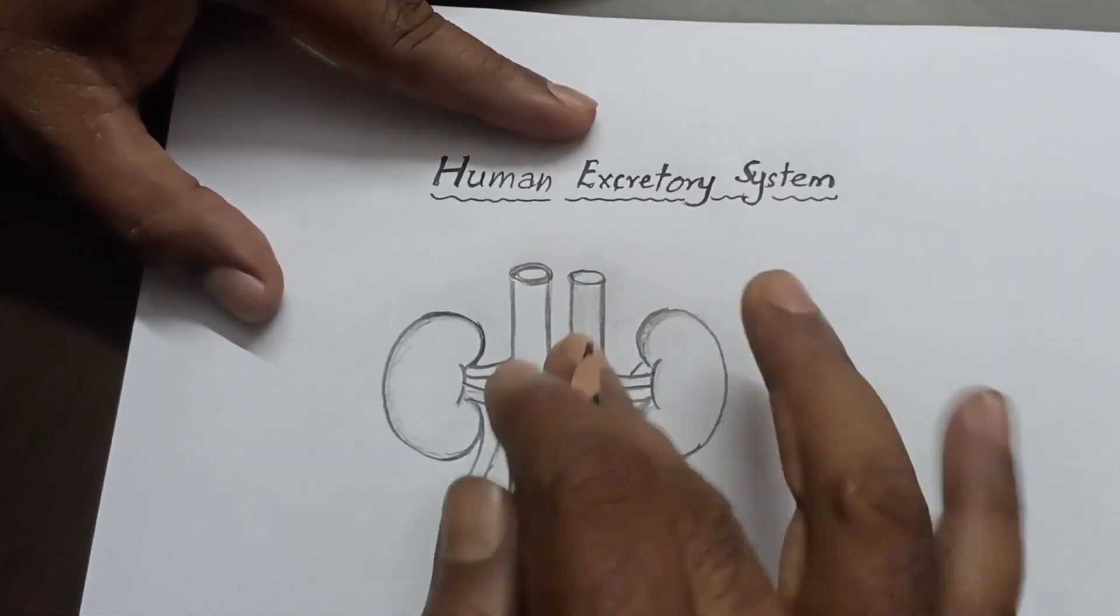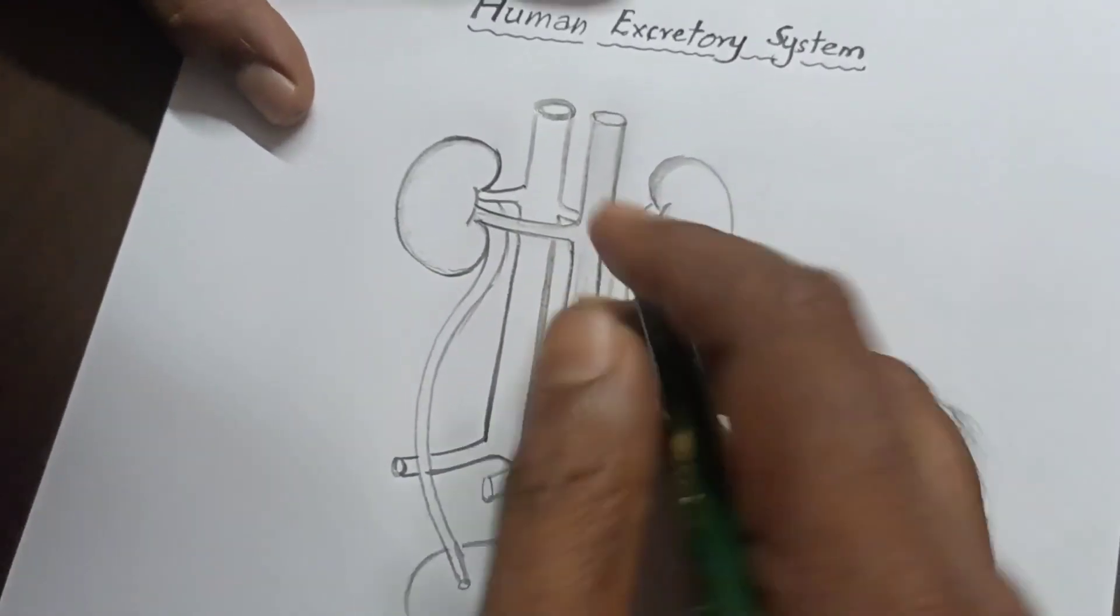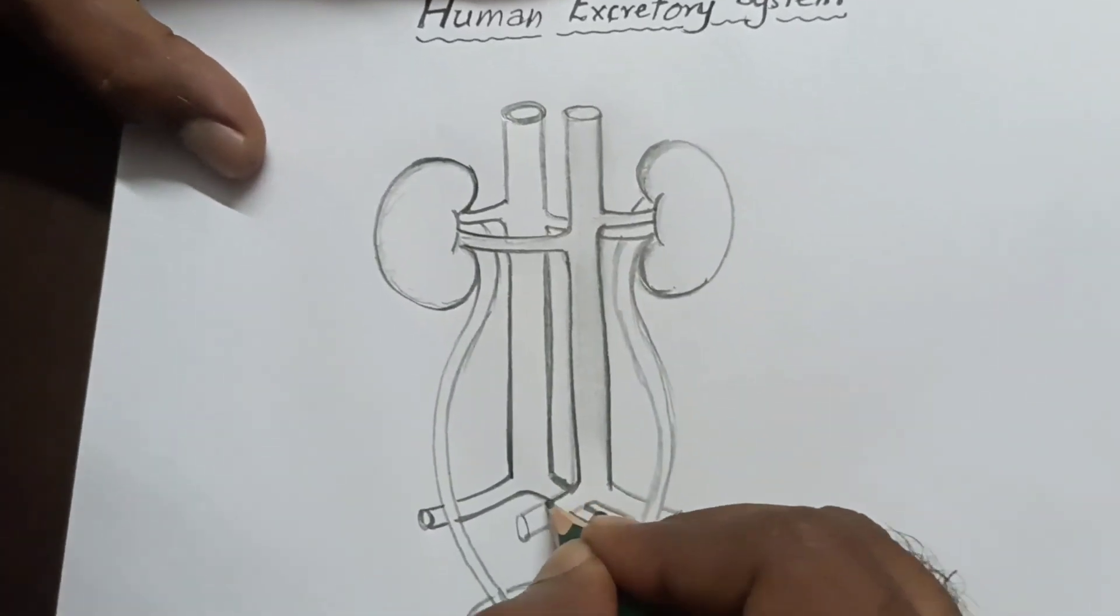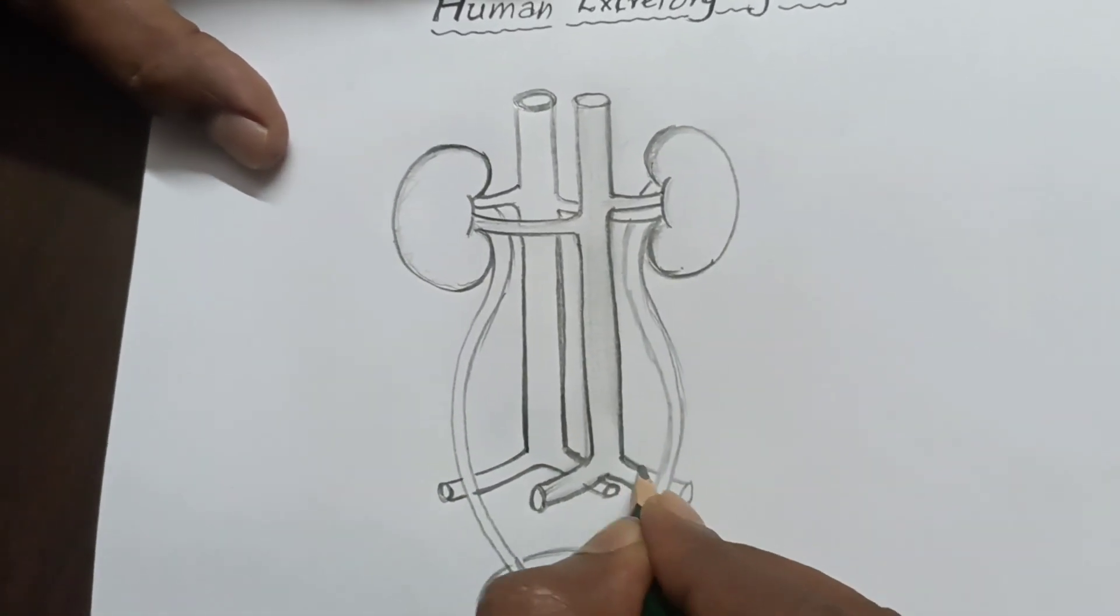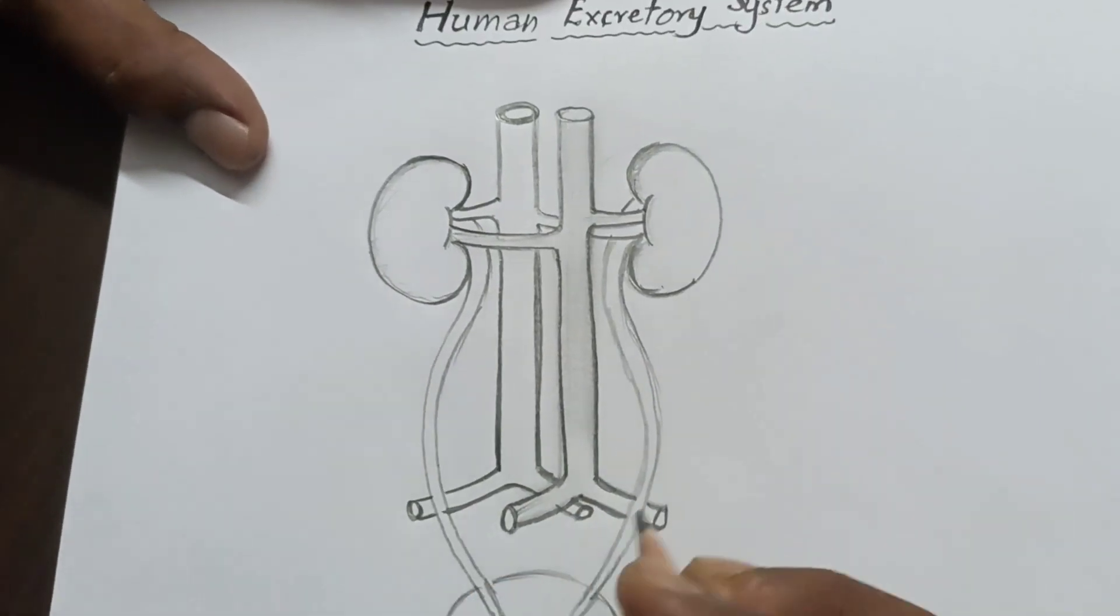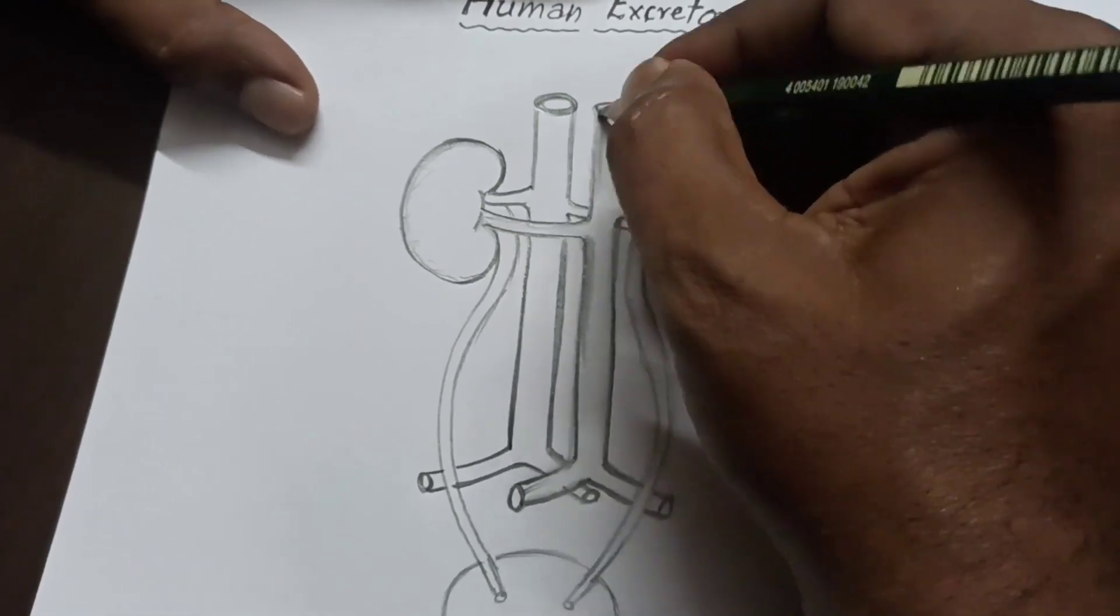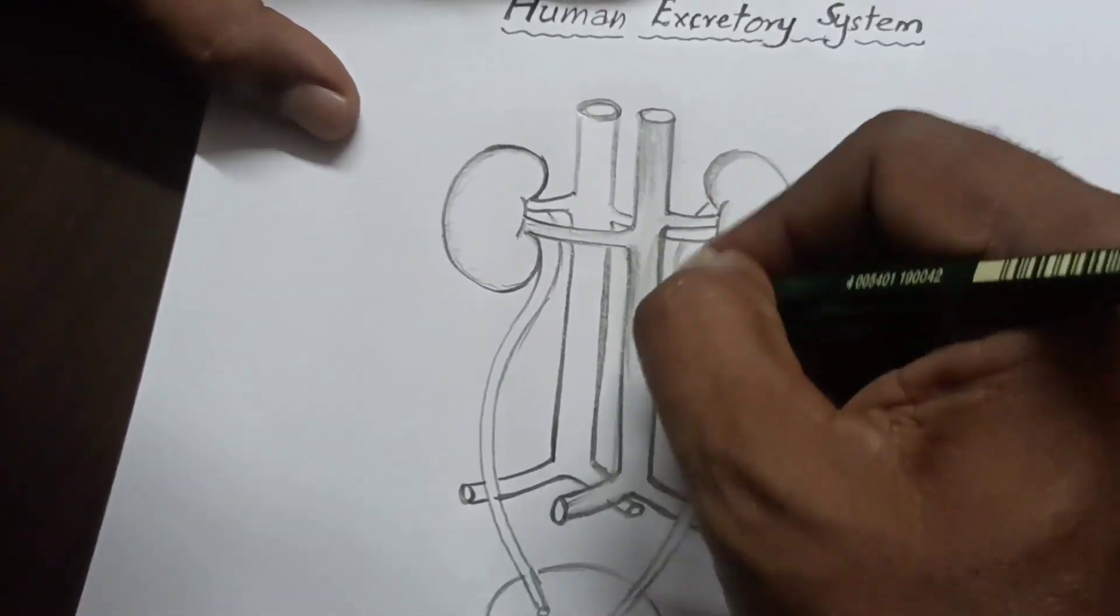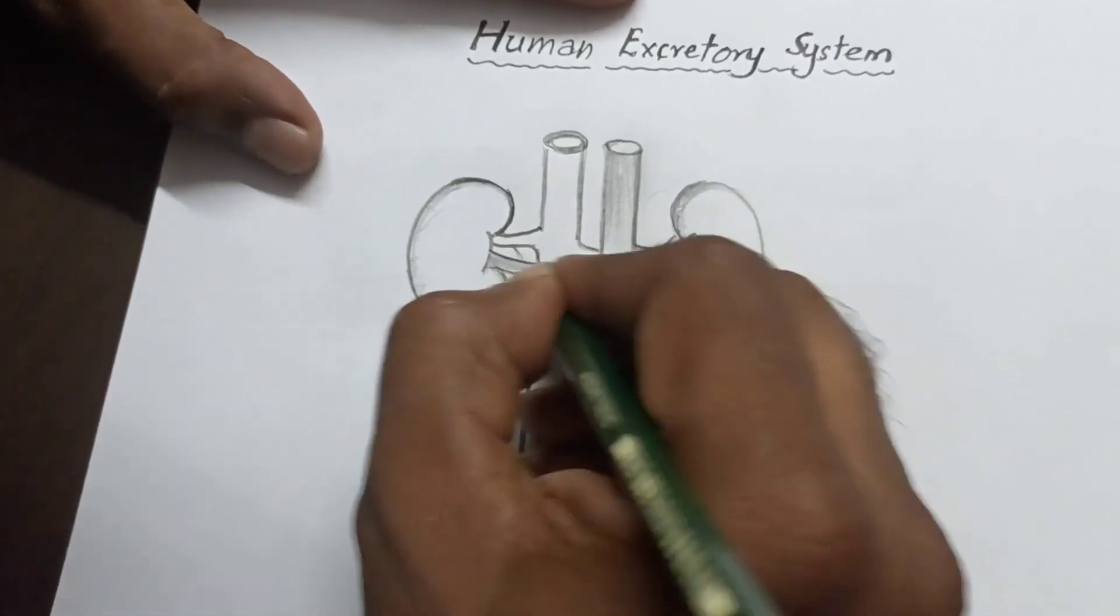You have to darken like this. Arteries differ from the veins, so to give the difference we have to darken these vessels like this. To give a slight difference between veins and arteries.